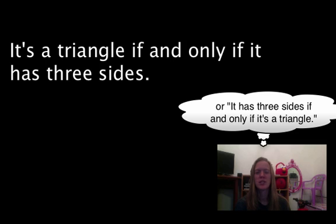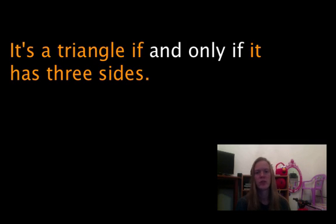And so if we kind of break that down and think about what that means. It's a triangle if it has three sides. So yeah, it's a triangle only if it has three sides. It means that the only way that something can be a triangle is if it has three sides. So we got both of our if-then statements, our original and our converse, into that one biconditional statement. It's a triangle if and only if it has three sides.